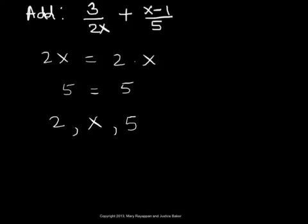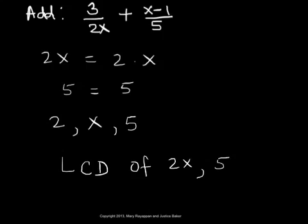The LCD is the product of all these factors. So the LCD of 2x and 5 is 2 times x times 5, which equals 10x.